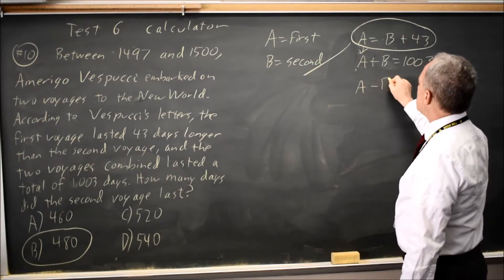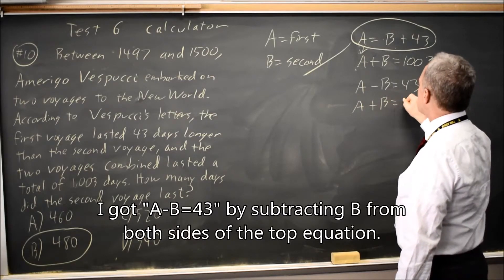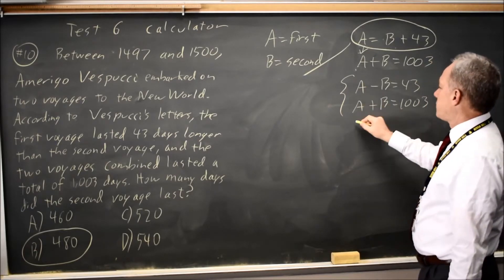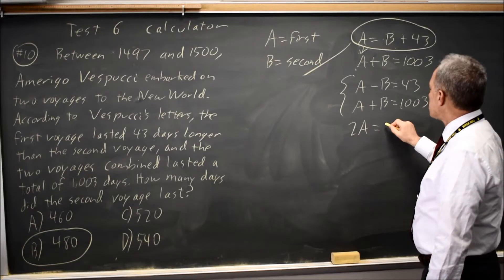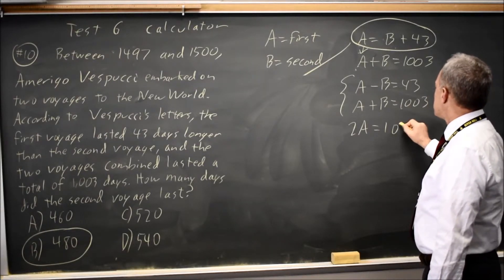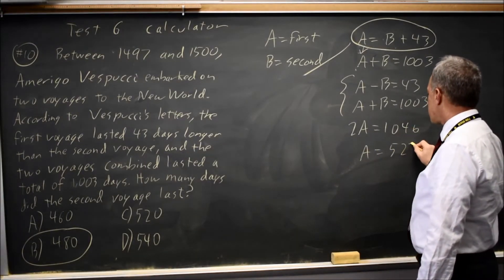A minus B equals 43, and A plus B equals 1,003. I can add these two equations to each other. So A plus A is 2A, negative B plus B is 0, equals 1,046. So A is half that, is 523.